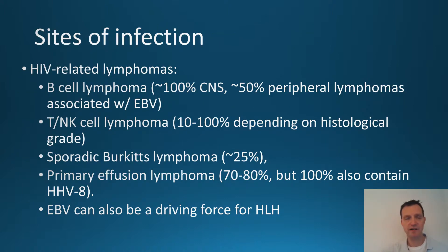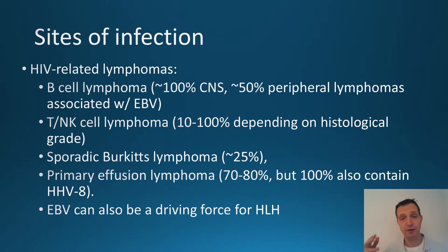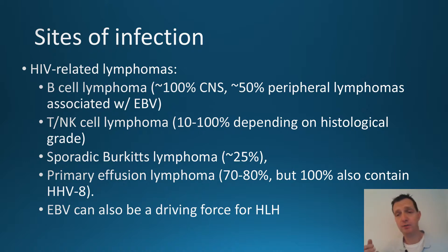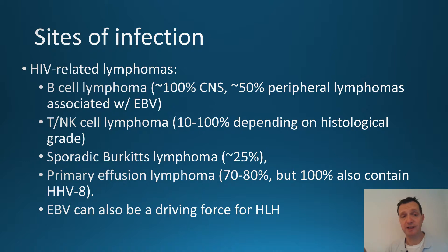In terms of sites of infection, there are many HIV-related lymphomas — for example B-cell lymphoma, T-cell natural killer cell lymphoma, sporadic Burkitt's lymphoma, and primary effusion lymphoma. It's important to realise that not all of these lymphomas contain Epstein-Barr virus. The reason an EBV viral load is done is to find out if EBV is actually driving the lymphoma forward. In primary effusion lymphoma, 70 to 80% will contain EBV, but interestingly 100% will contain HHV-8, another herpes virus. It is the EBV that is pushing primary effusion lymphoma forward.